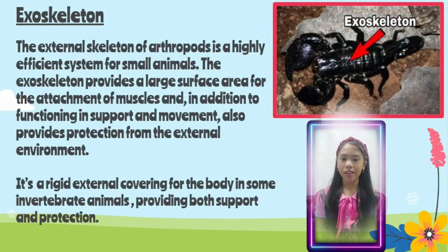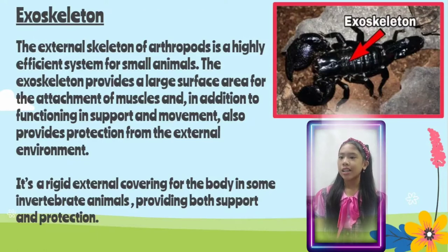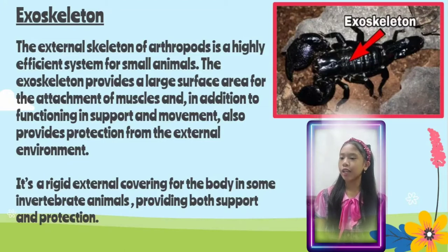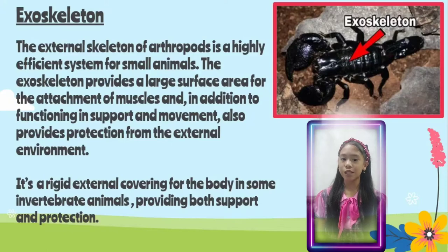Next, we are going to talk about exoskeleton. Exoskeleton is the external skeleton of arthropods. It is a highly efficient system for small animals. The exoskeleton provides a large surface area for the attachment of muscles and, in addition to functioning in support and movement, also provides protection from the external environment. It is a rigid external covering for the body in some invertebrate animals, providing both support and protection.